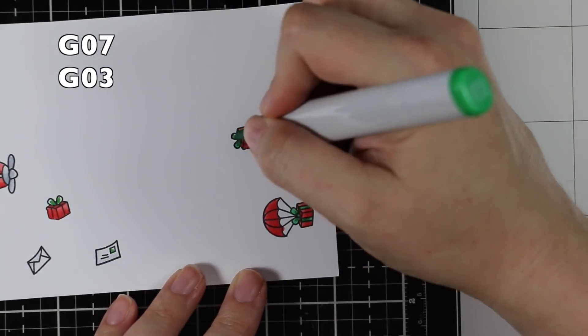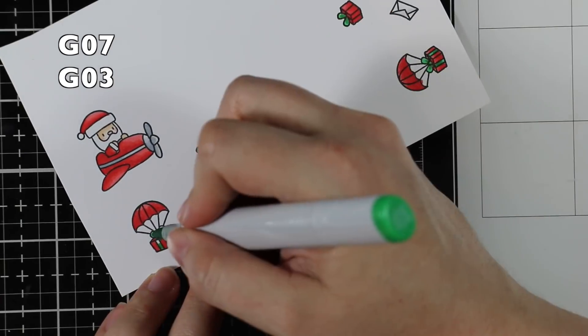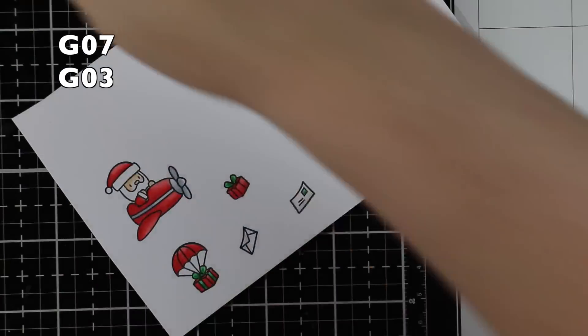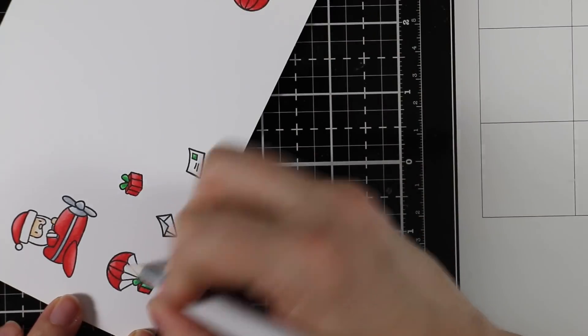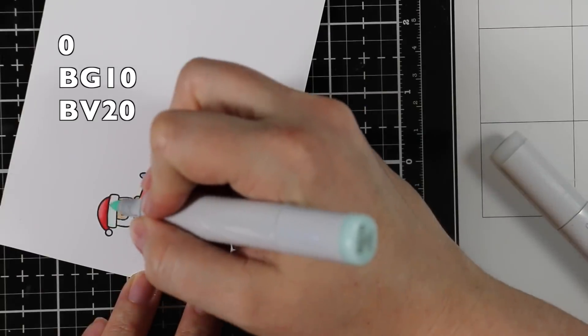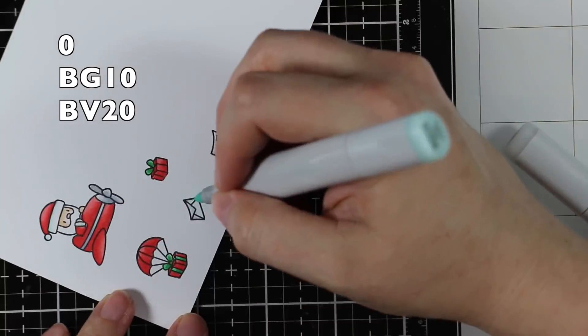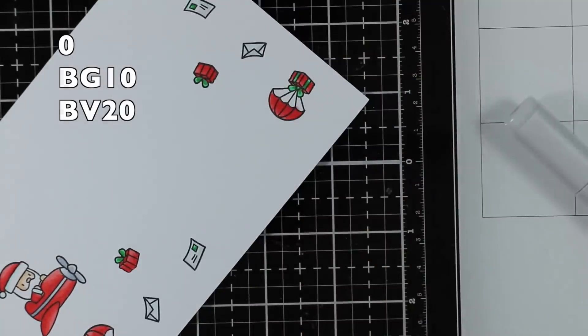I did reds on the bulk of everything and then just added a little bit of green for the Christmas presents, like the bows and ribbon, just to get that little pop of color. Then I did a little bit of fixing with my colorless blender because I usually end up going outside the lines.